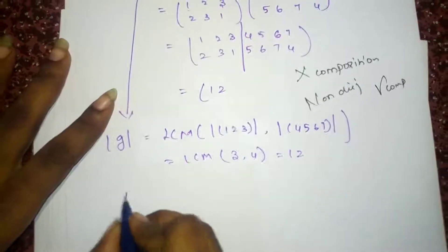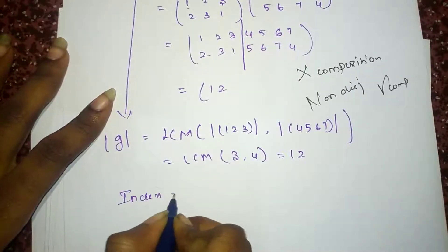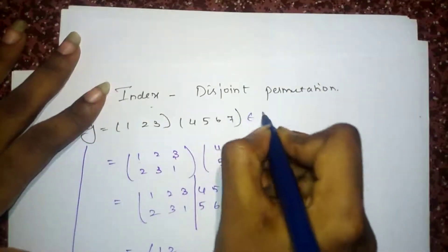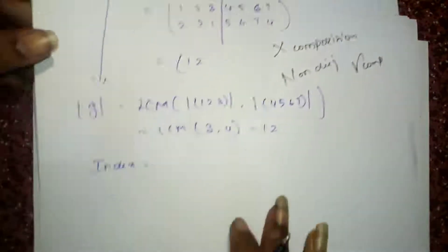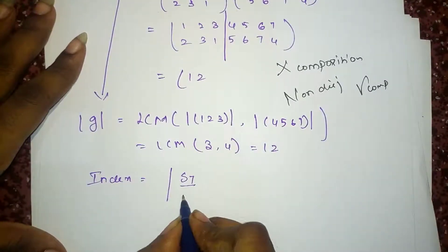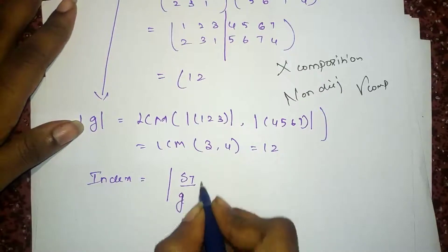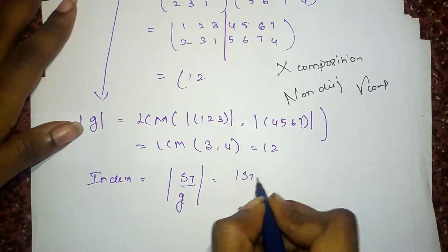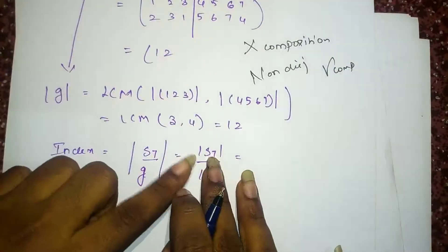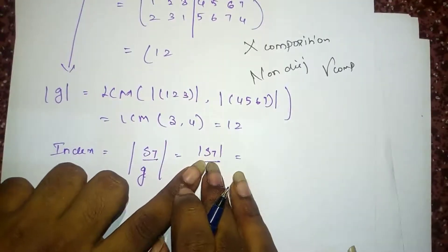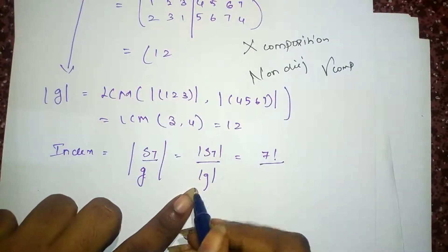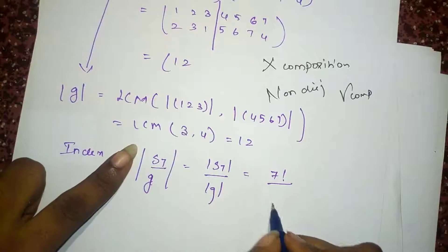So, now we will find the index of it. Since the largest number is 7, it belongs to S7. Index is S7 by order of g. That is, order of S7 by order of g. And I have already said how to find the order of S7. The link is provided in the description box.